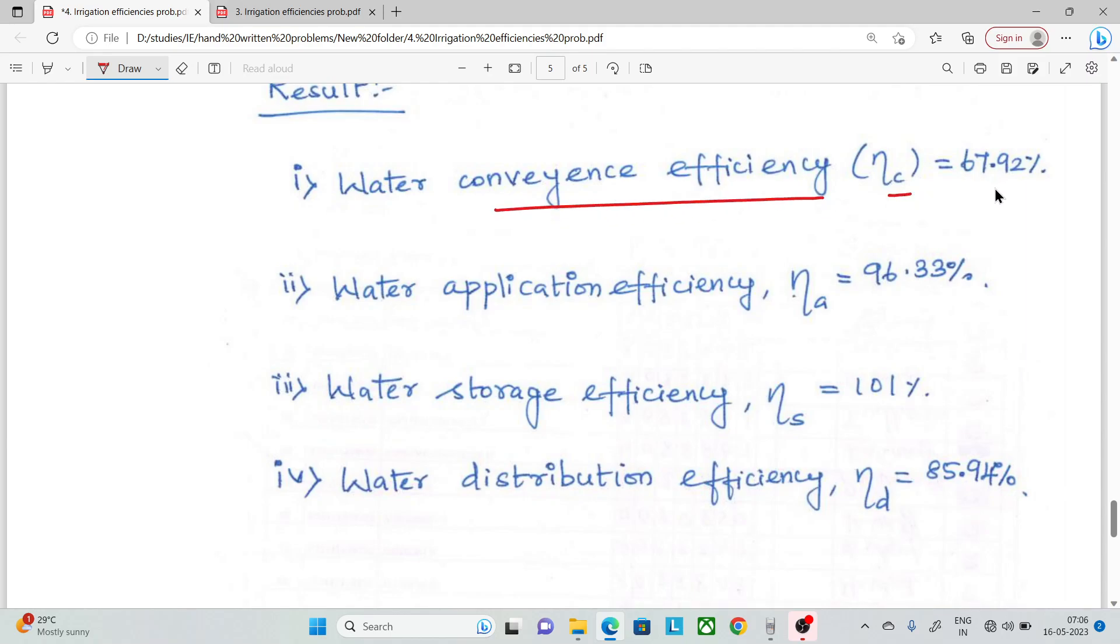The results: Conveyance Efficiency eta_C, Application Efficiency eta_A, Storage Efficiency eta_S, Distribution Efficiency eta_D. Thank you.